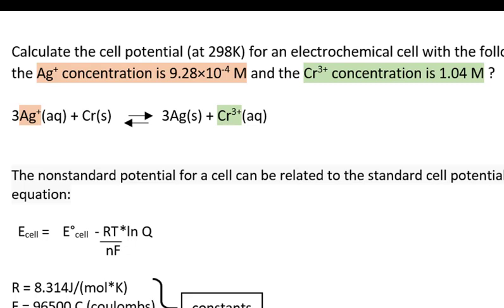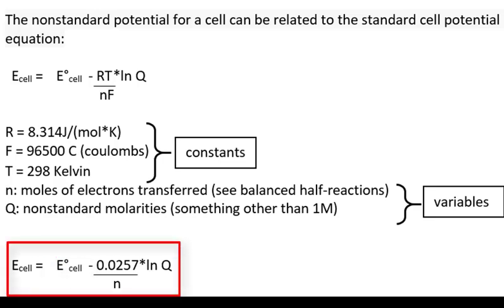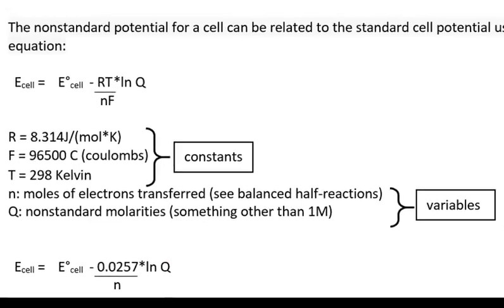Therefore reducing the cell potential from its standard value. The first thing we need to do is calculate the standard cell potential value. Once we do that, we can substitute that value along with some other values into something called the Nernst equation, shown here. As a reminder, Q is the ratio of product to reactant at non-standard conditions.